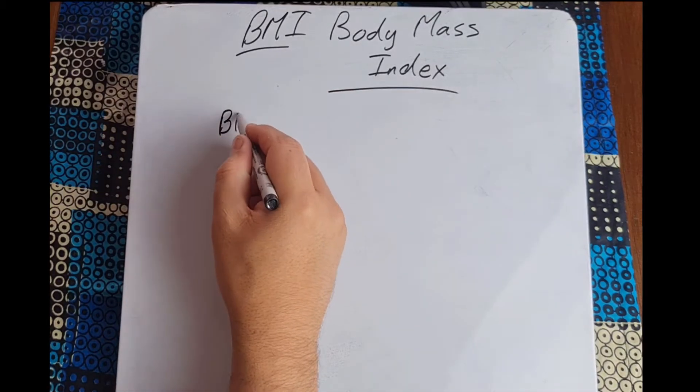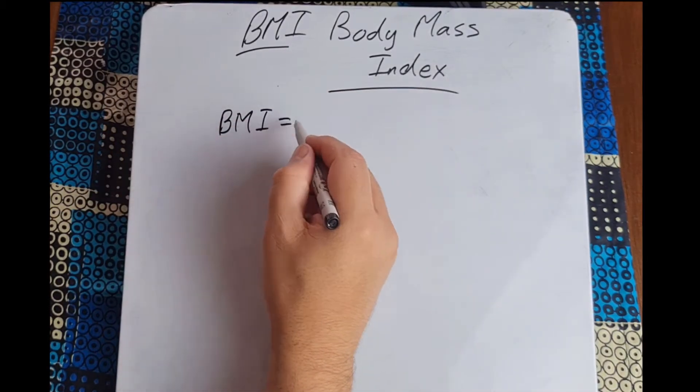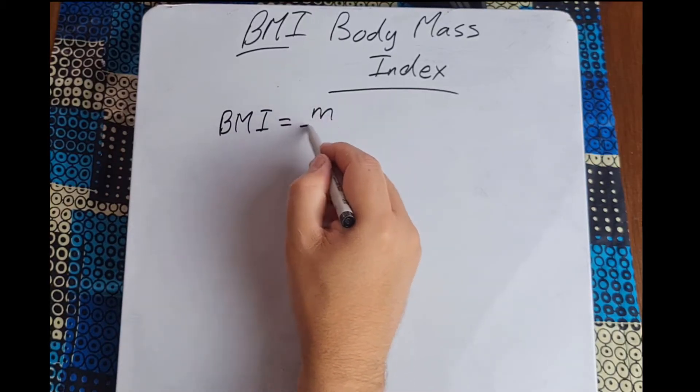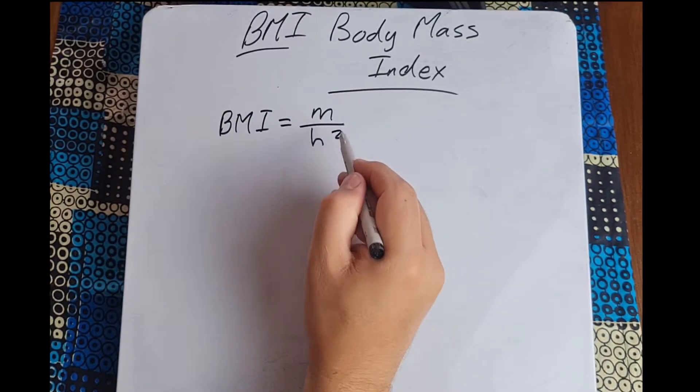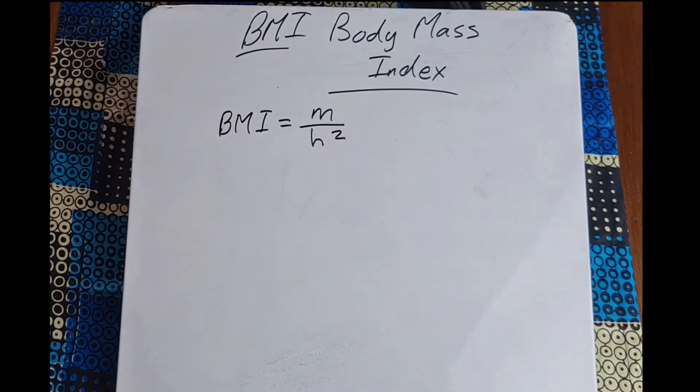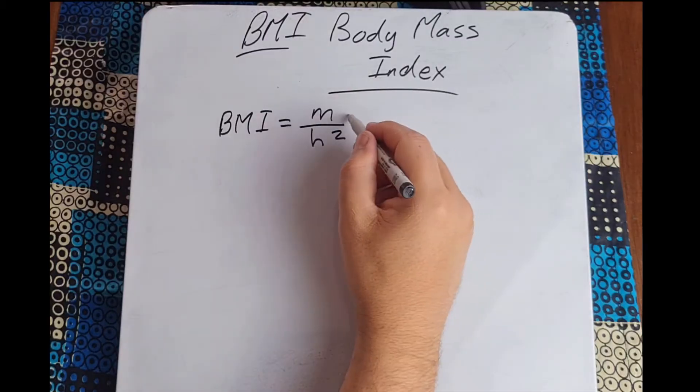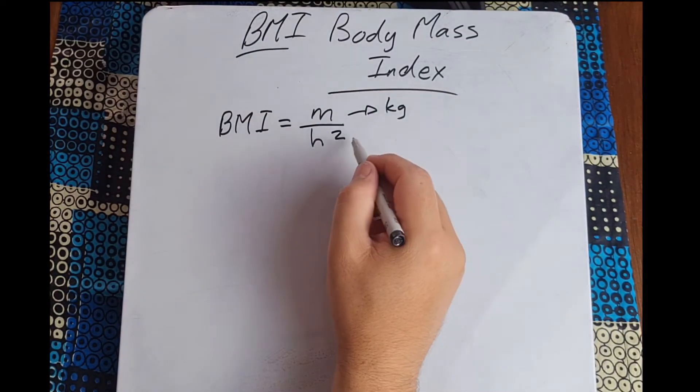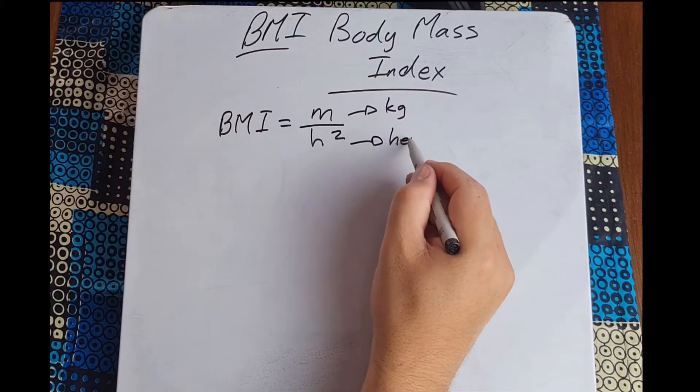So the formula for BMI reads as follows: it is BMI equals M over H² or H squared. So M would represent the current mass of the person, so this would represent the kilograms of the person, and H would represent the height.